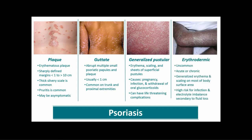Erythrodermic psoriasis is uncommon, but when it does occur it can be acute or chronic, presenting with generalized erythema and scaling on most of the body surface area. There is a high risk for infection and electrolyte imbalance secondary to fluid loss — very important when we have shifts in electrolytes.